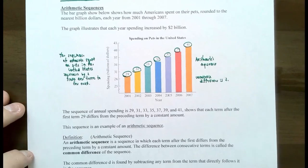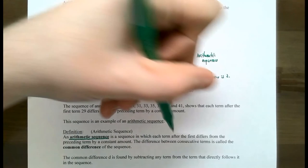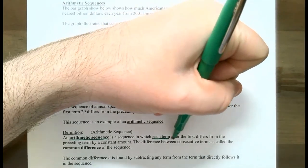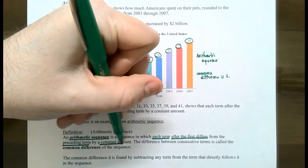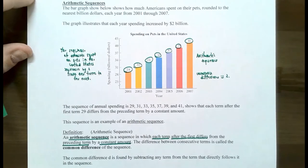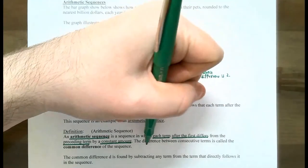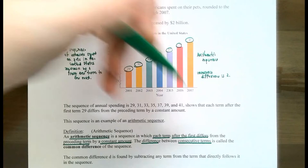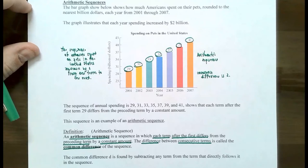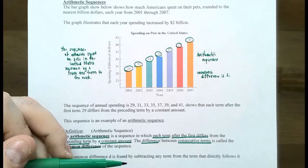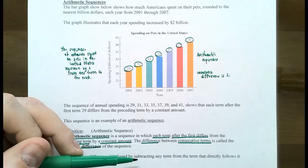Let's start with the definition of an arithmetic sequence. An arithmetic sequence is a sequence of numbers where each term after the first term differs from the previous term by a constant amount. You're adding the same amount from one term to get to the next term and so on. The difference between consecutive terms is called the common difference, and we're going to denote this with a lowercase d. The common difference d is found by taking any two successive terms and subtracting them.